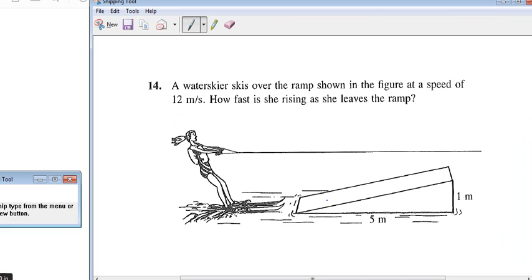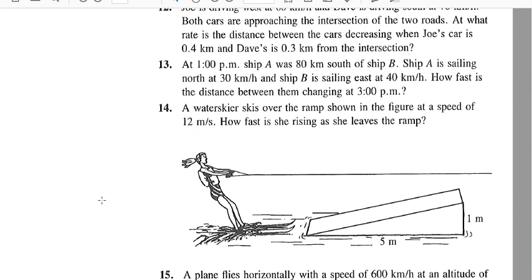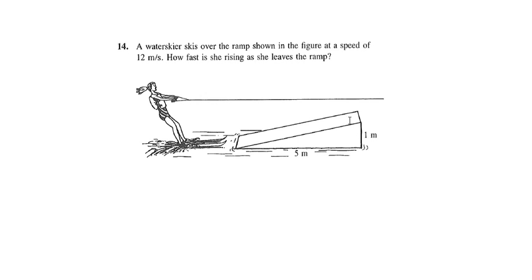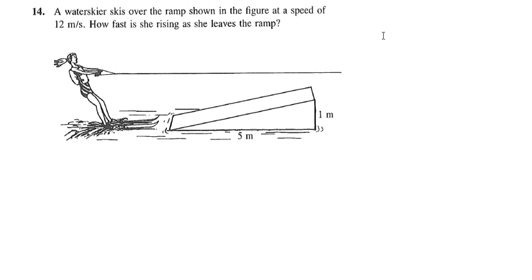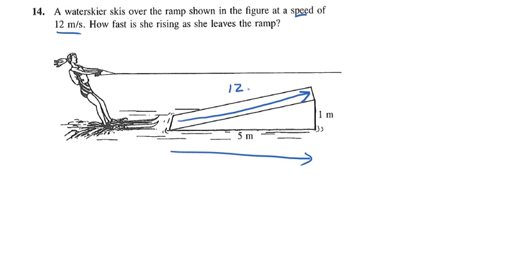The question says a water skier skis over the ramp shown at a speed of 12 meters per second. Speed is a rate of change of distance over time. So 12 meters per second is how fast this water skier is moving. Notice that the water skier is going to go over the ramp — it's actually this change right here, up the ramp. That's 12 meters per second.